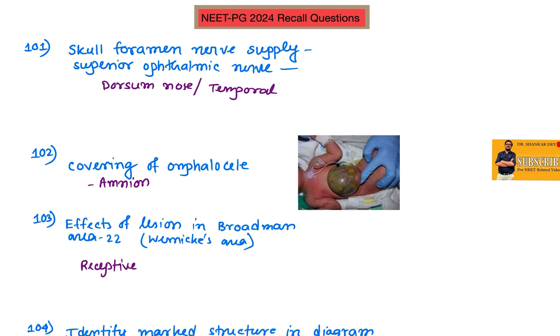Hello everyone, let's discuss the NEET-PG 2024 recall questions very fast. Starting with question number 101 on skull foramen - I think the base of the skull image was given and one structure was marked, which is actually the superior orbital foramen. The question asked about sensory supply.